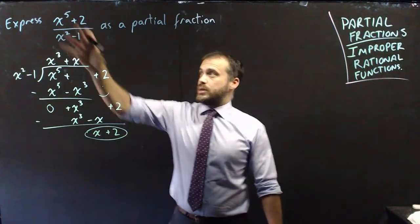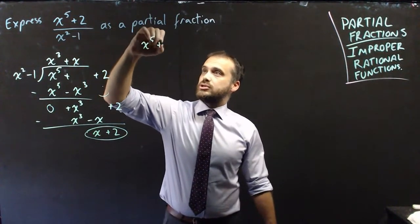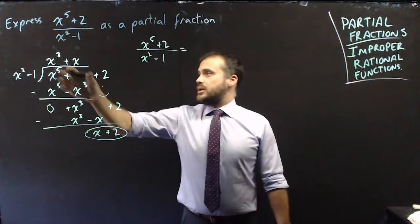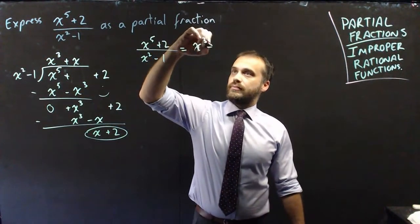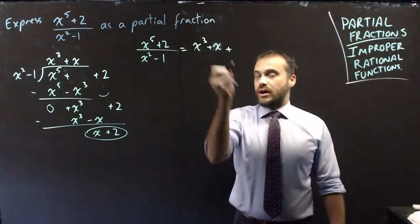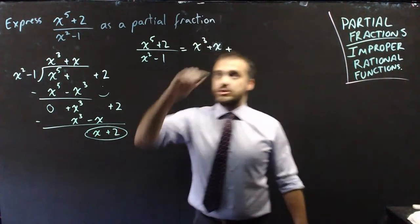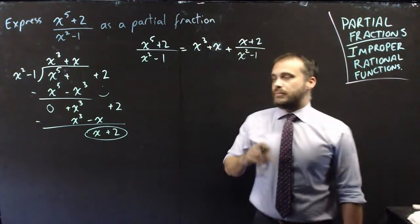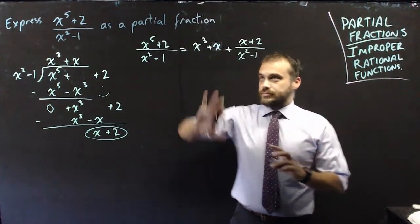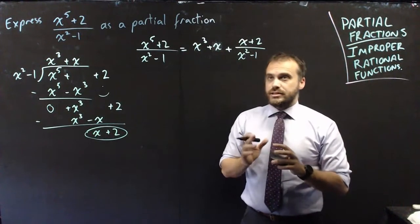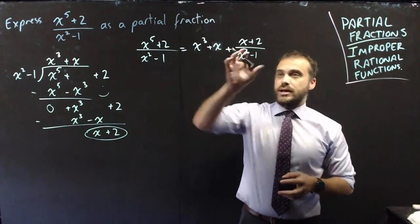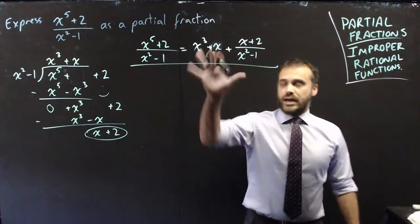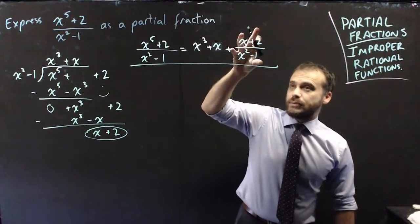Now that we've done all of that, we can express x to the 5 plus 2 over x squared minus 1 as equal to x cubed plus 3, plus a fraction: plus x plus 2 divided by x squared minus 1. We can leave x cubed plus 3 as it is, and then do this remaining fraction as a partial fraction. I'll rule this off and just deal with the partial fraction part.